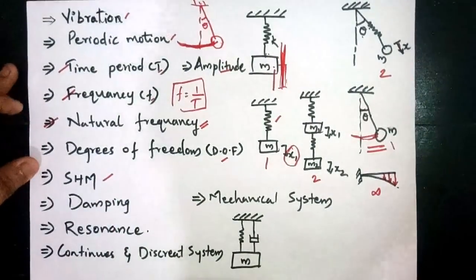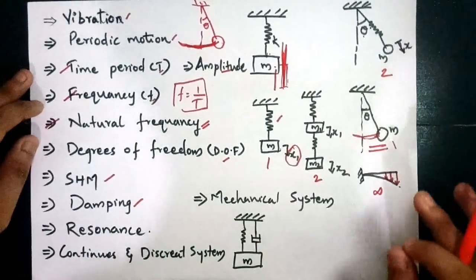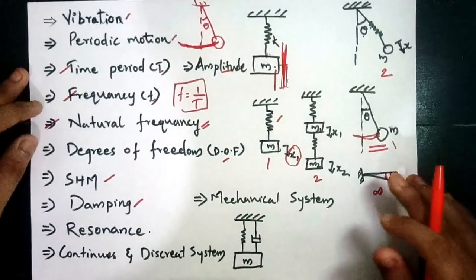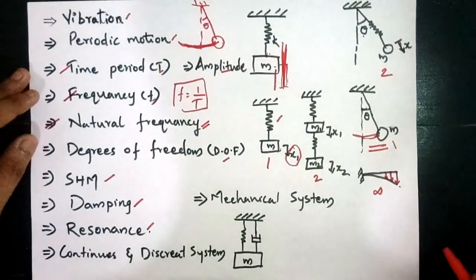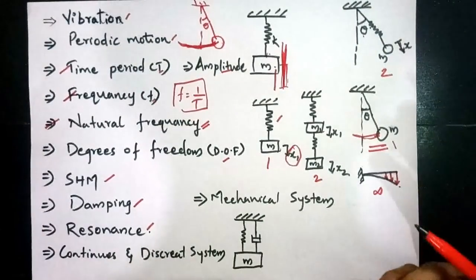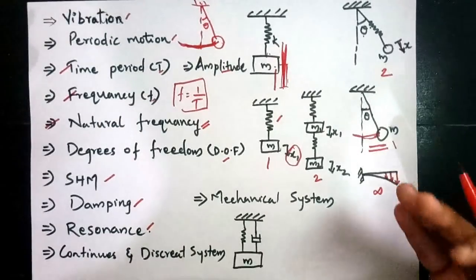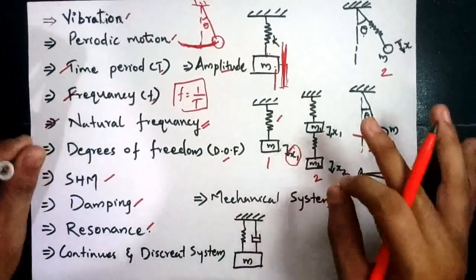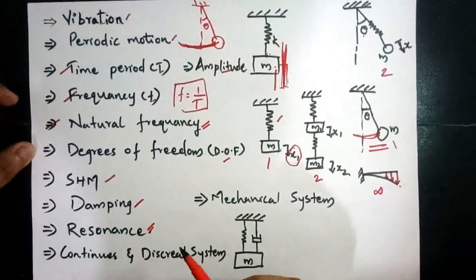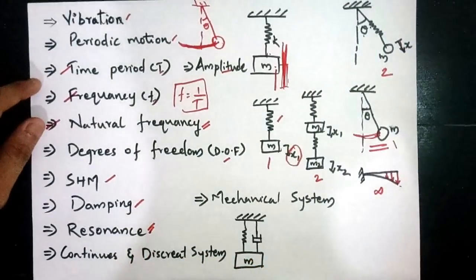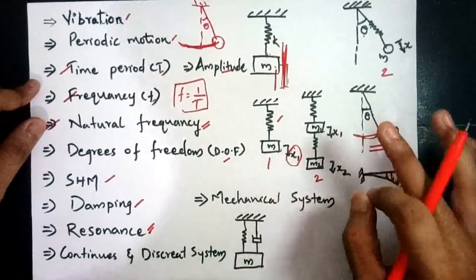Simple harmonic motion means to and from motion from a mean position. Next is damping — the resistance to a vibrating motion is known as damping. Then the next term is resonance. Resonance is the stage at which the frequency of external excitation equals the natural frequency of the system. At resonance, the amplitude of vibration becomes excessively large.